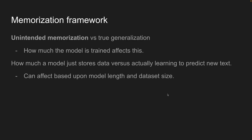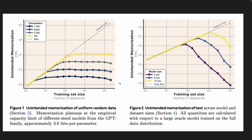What have they found? Unintended memorization is affected by how much data the model is trained on and the size of the model. How much a model just stores data versus actually learning to predict the next token is also based upon the model length and the dataset size, as seen in that figure.